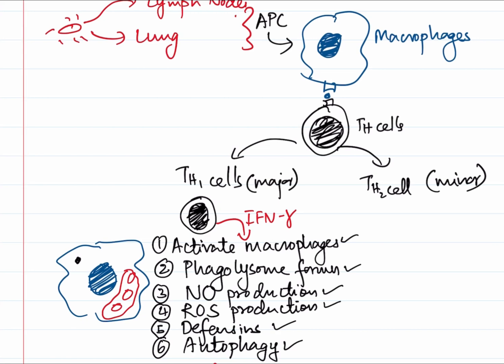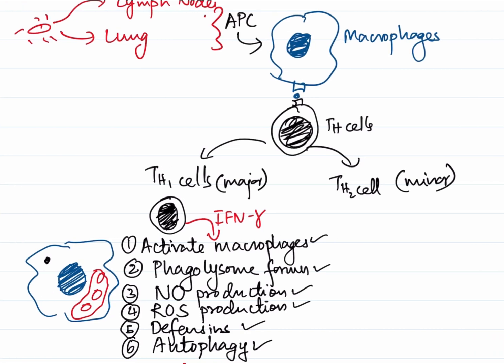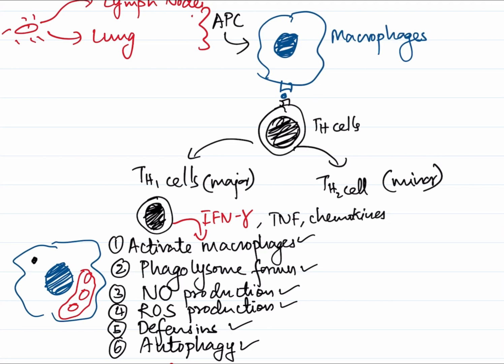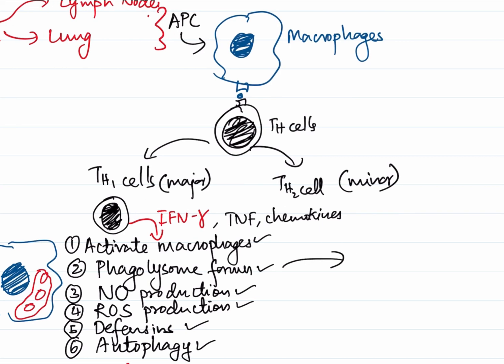By this response, the tubercle bacilli get contained. Some other cytokines are also involved, such as tumor necrosis factor and chemokines, and together they lead to the formation of a granuloma.